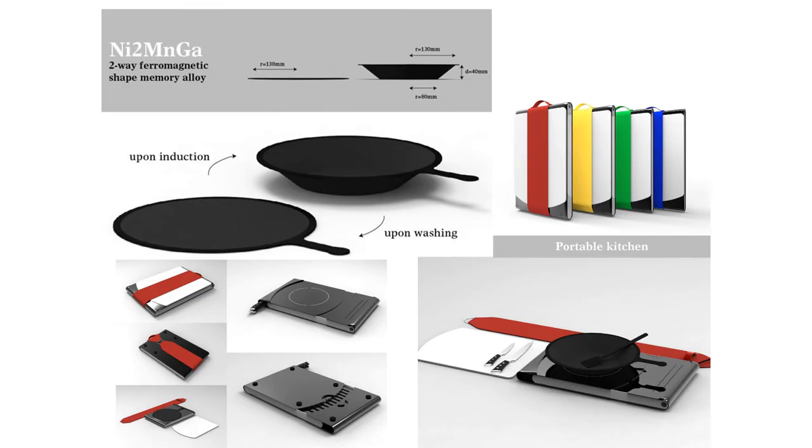Here is shown a portable kitchen made of shape memory alloys. The shape memory alloys can be converted into a container-like structure and after use can be folded back and stored in a cupboard.